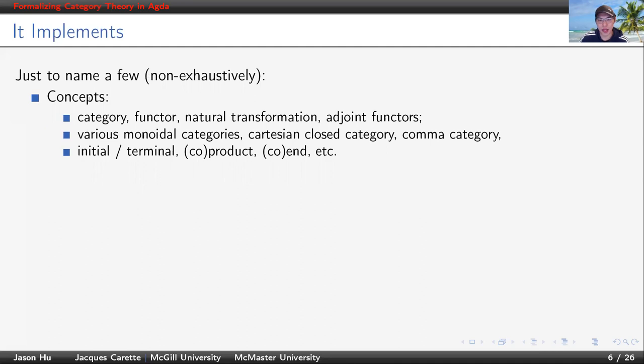Just to name a few things we have in the library. We have the following concepts like category, functor, natural transformation, adjoint functors, different kinds of monoidal categories, Cartesian closed category, comma category, initial and terminal objects, products, coproducts, ends, coends, etc.